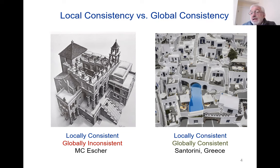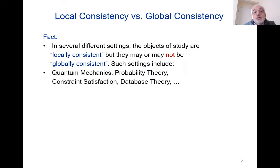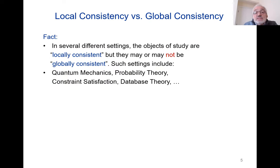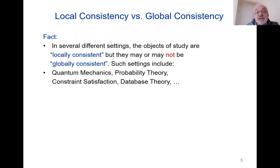And the answer is yes. What you're looking at is a photo from the island of Santorini in Greece. So these two together depict the following situation: in several different settings, the objects of study are locally consistent — and I've put that in quotes because every time it requires a precise definition — but they may or may not be globally consistent. Escher's drawing was locally consistent but globally inconsistent. The picture from Santorini was both locally and globally consistent.